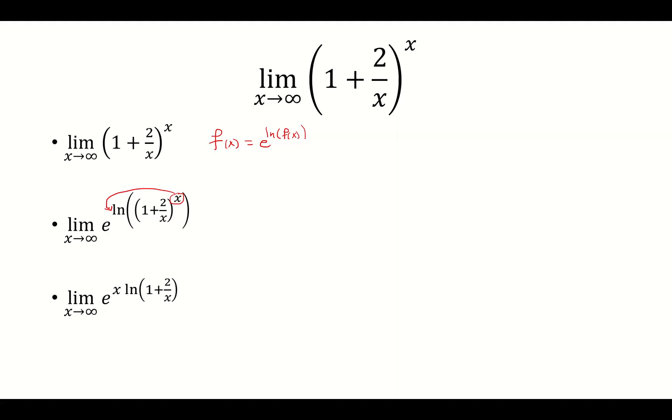And at this point, we're going to switch e and the limit. So basically e will go down here and the limit will go as part of the exponent. So we have e to the limit as x approaches infinity of x times natural log of 1 plus 2 over x.